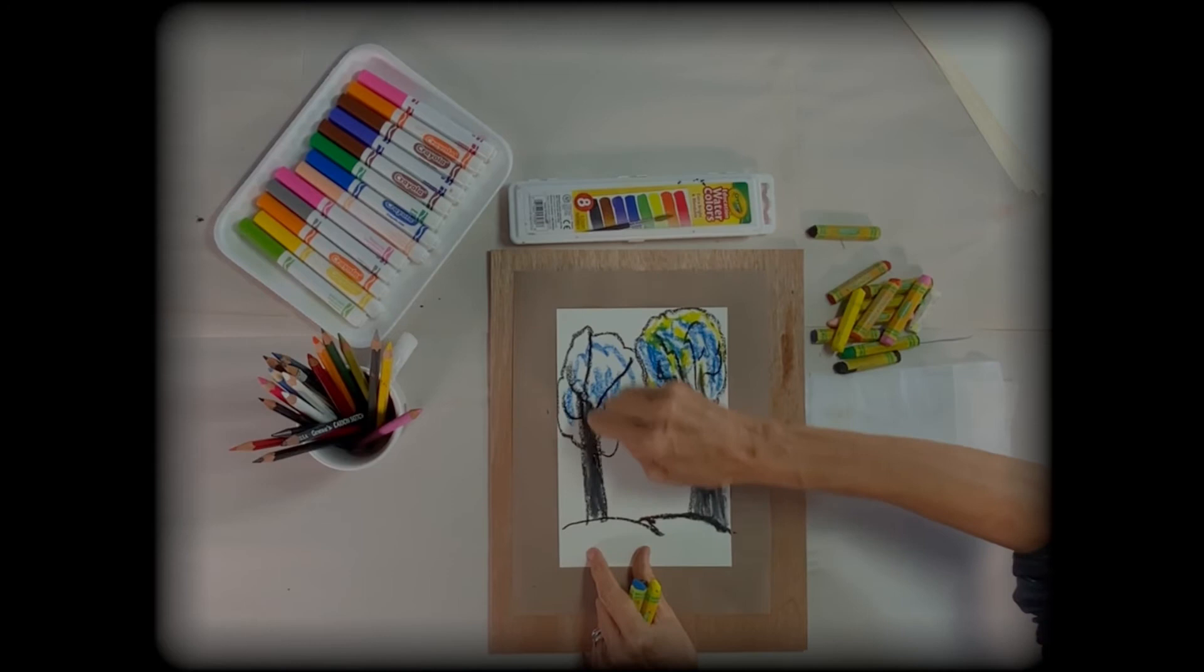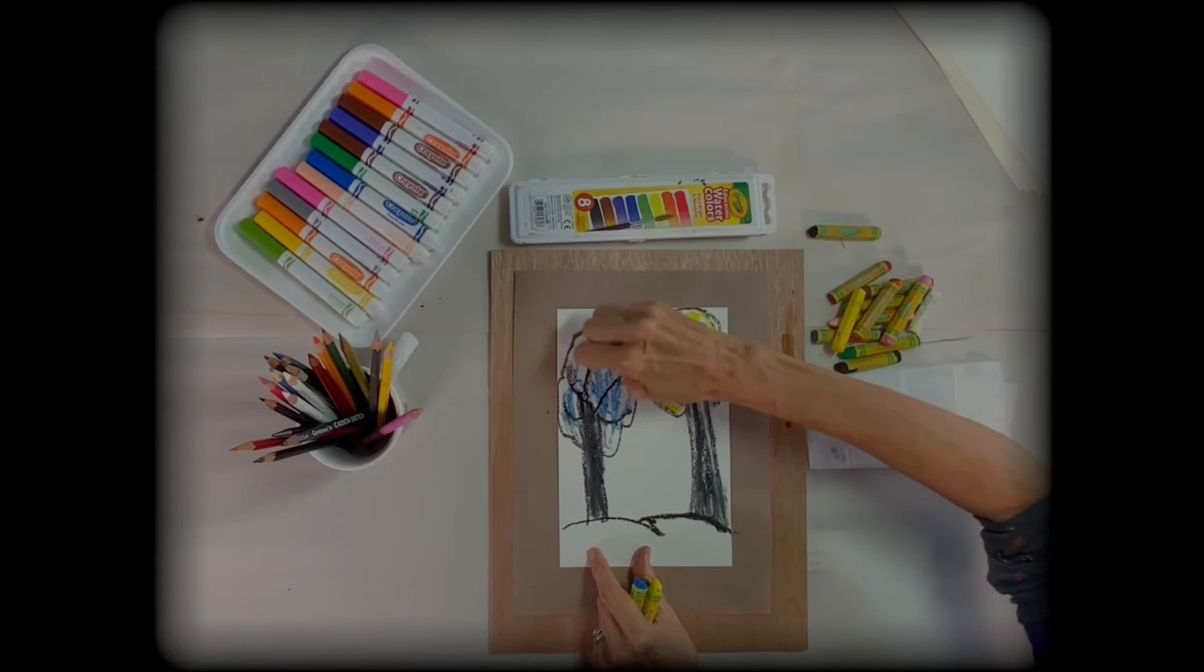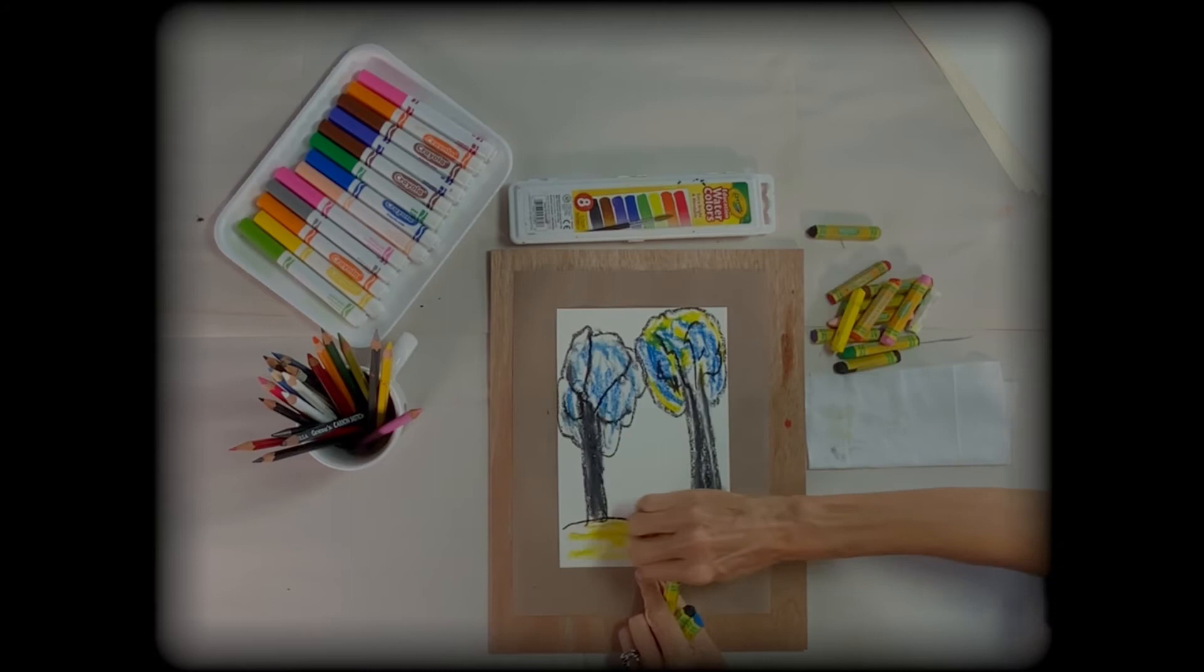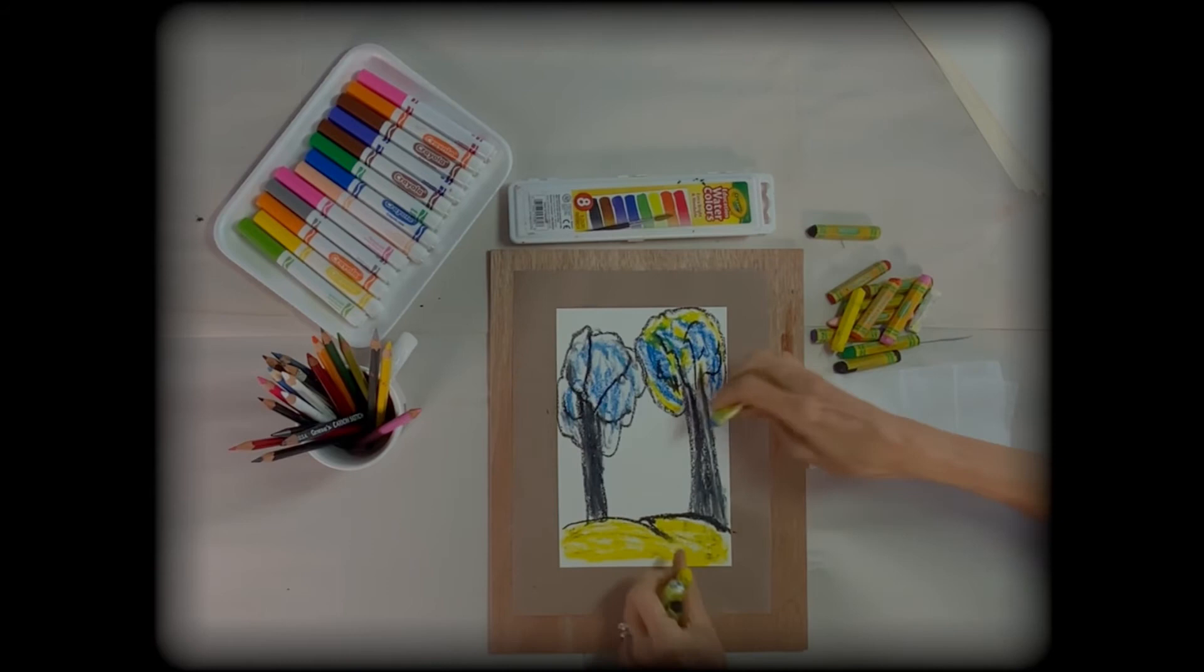And then I'm going to add some more white in here so I get that variety of grays that they're seeing. And I'm going to add some yellows down here on the field, the pasture, because they're not seeing in green. They're not seeing colors like we see them.